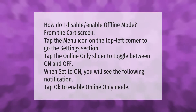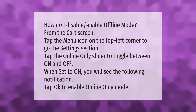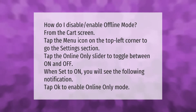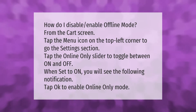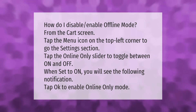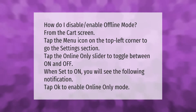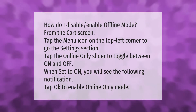How do I disable or enable offline mode from the cart screen? Tap the menu icon on the top left corner to go to the settings section. Tap the online only slider to toggle between on and off. When set to on, you will see the following notification. Tap OK to enable online only mode.